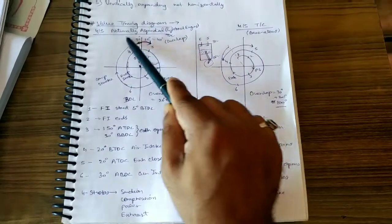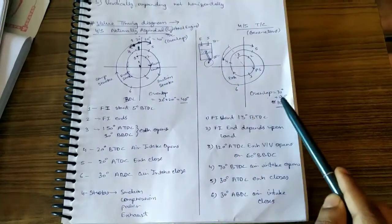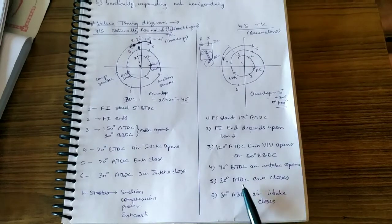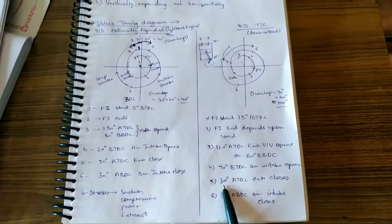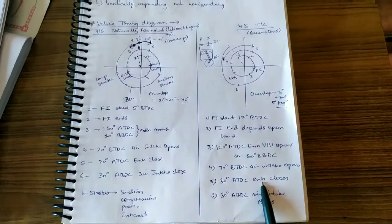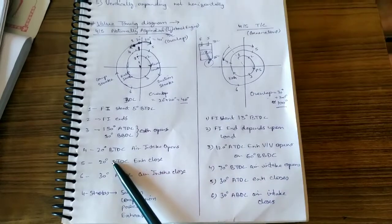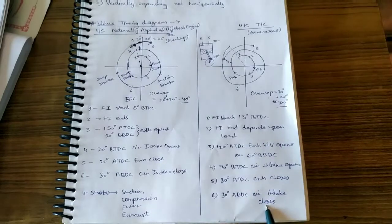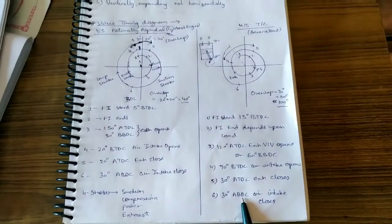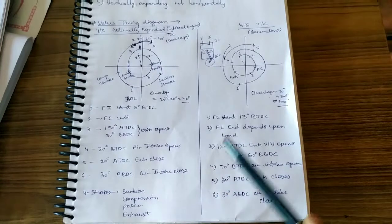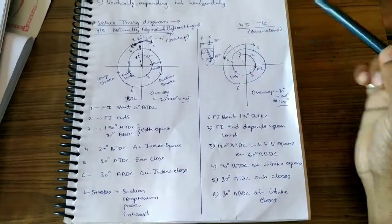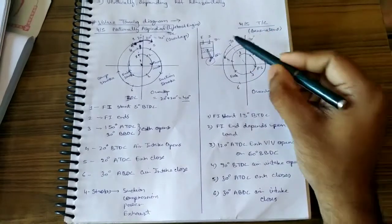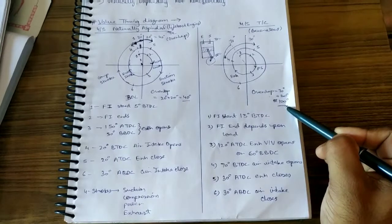In the turbocharged engine, the overlap will be 70 plus 30, which equals 100 degrees. At the fifth position, the exhaust valve closes at 30 degrees after TDC — compared to 20 degrees in the naturally aspirated engine, a 10-degree difference. At the sixth position, the air intake closes at 30 degrees after BDC, which is the same as before. So the combined overlap is approximately 100 degrees.